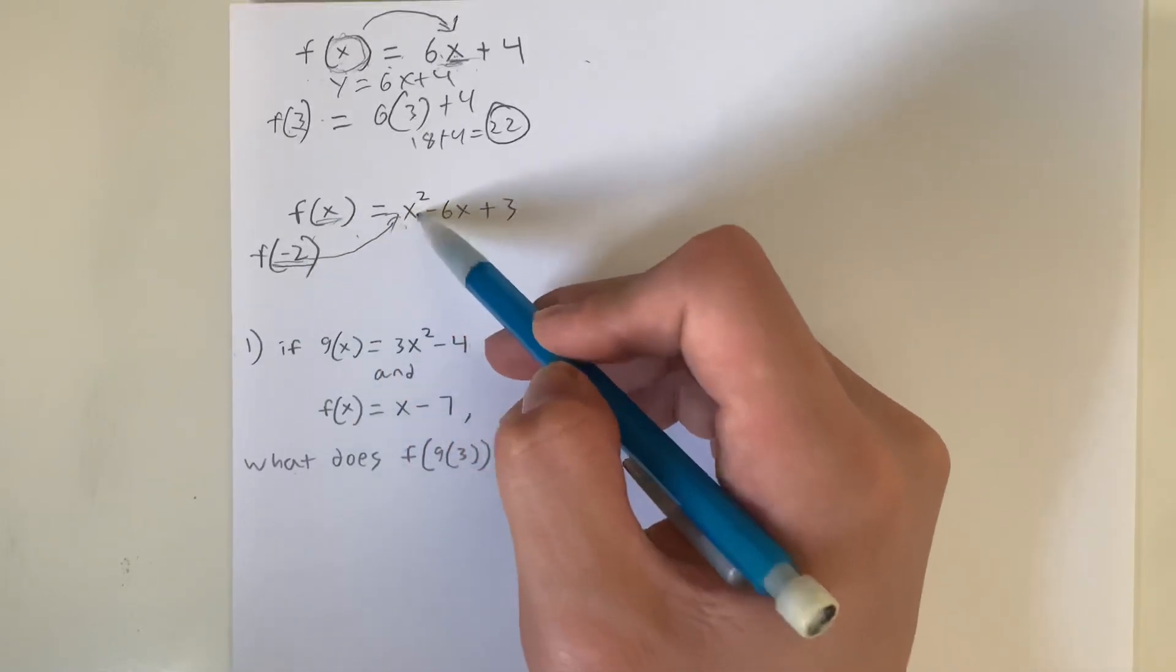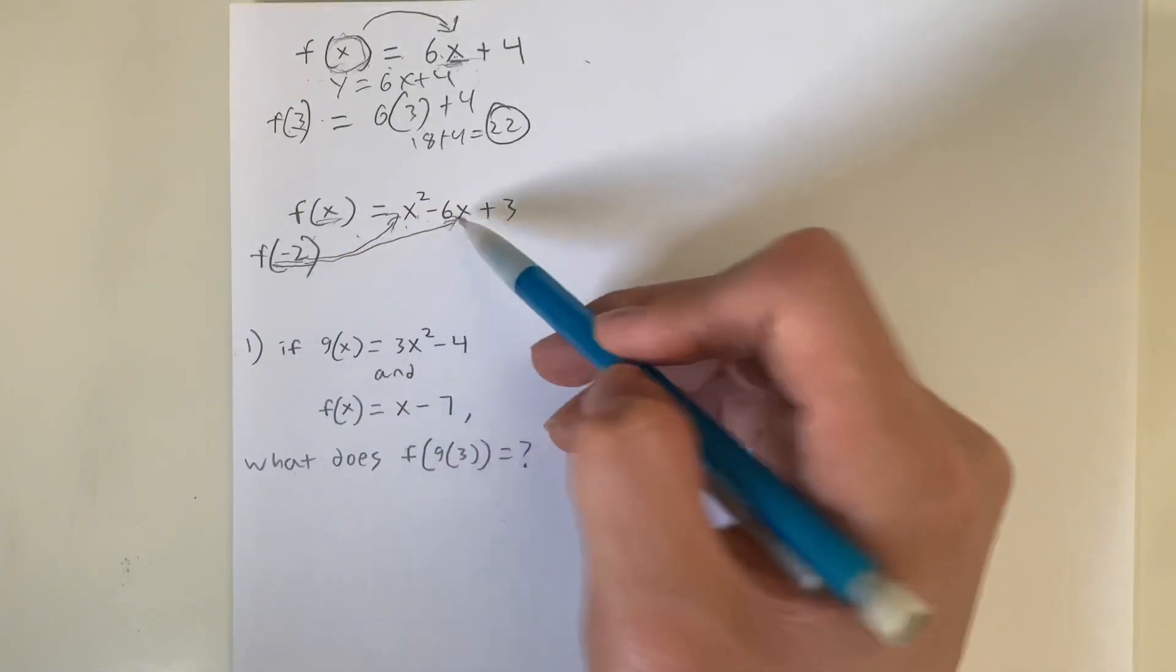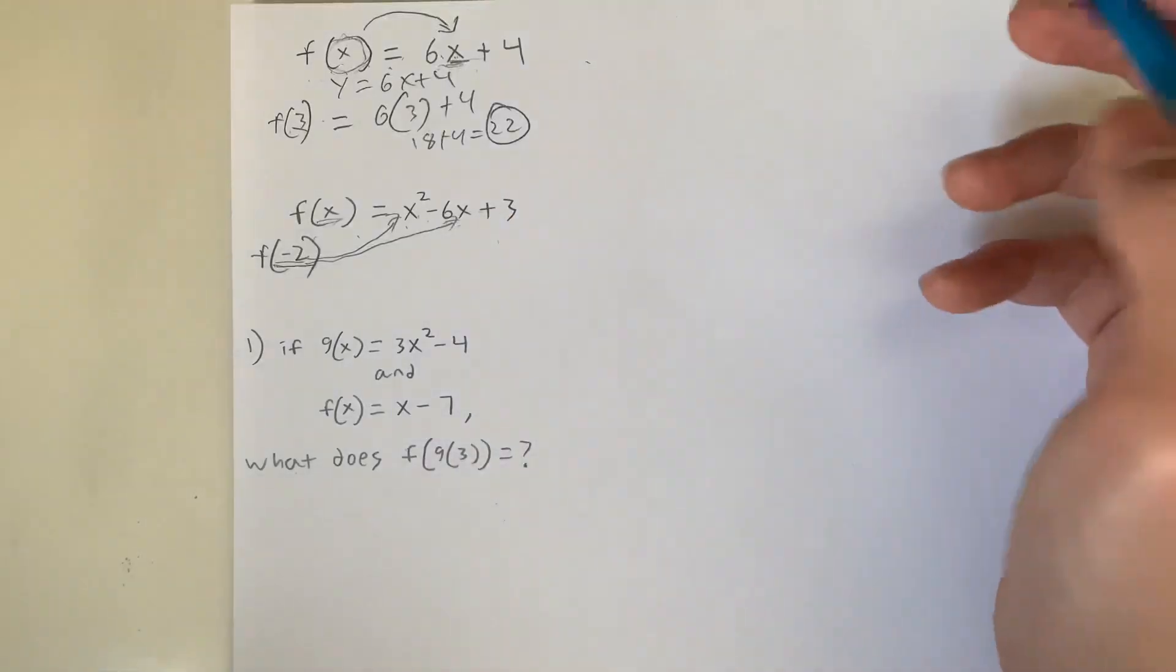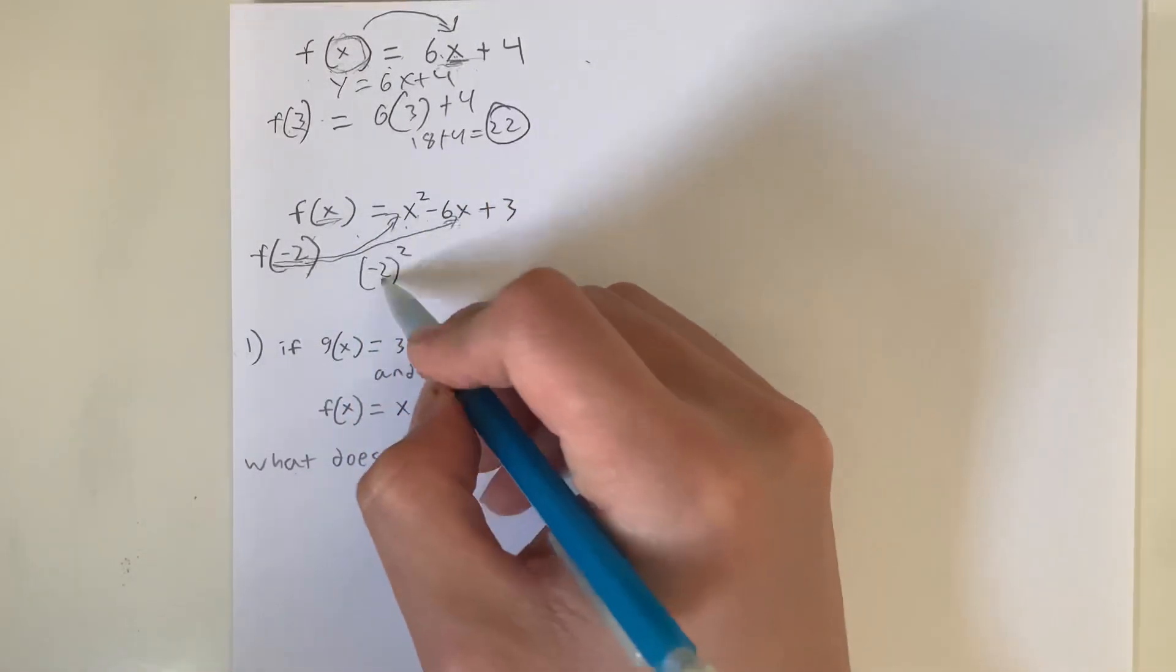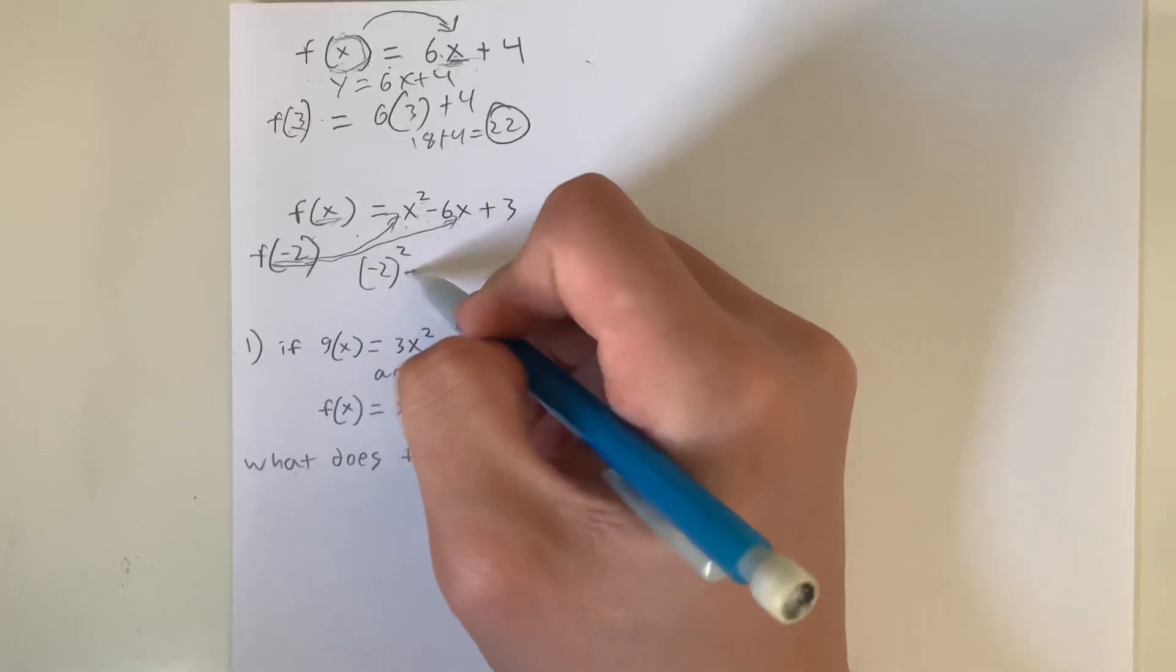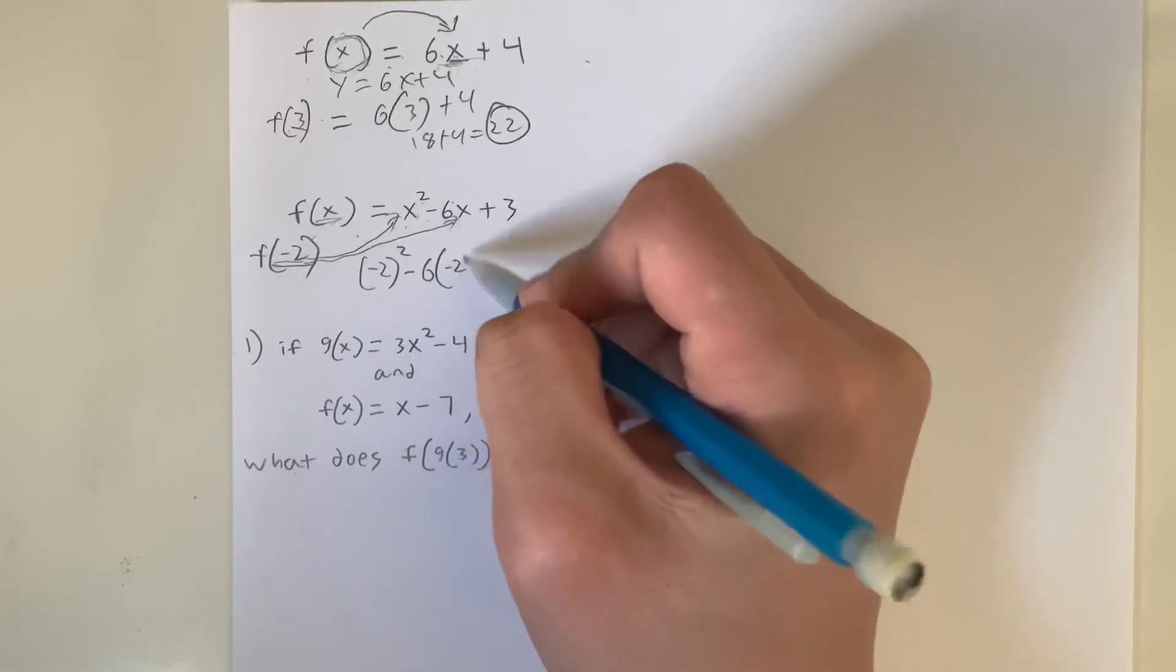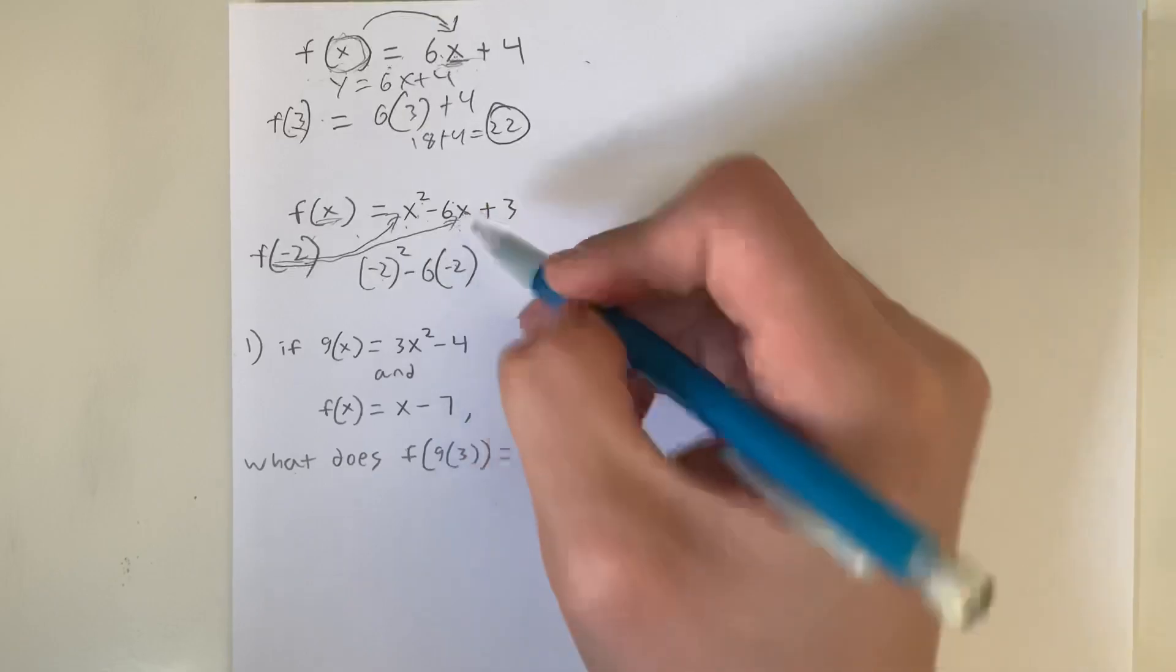So we're going to have to plug it in right here, x squared, and we have to plug it into this x right here, attached to negative 6. So when we do that, that gives us negative 2 squared. We substitute negative 2 for the value of x, minus 6 times negative 2, substitute negative 2 for the value of x, plus 3.